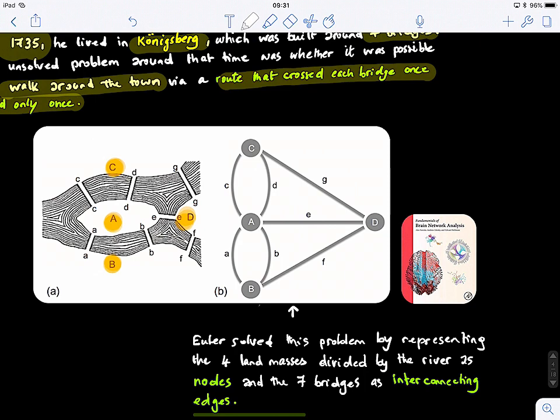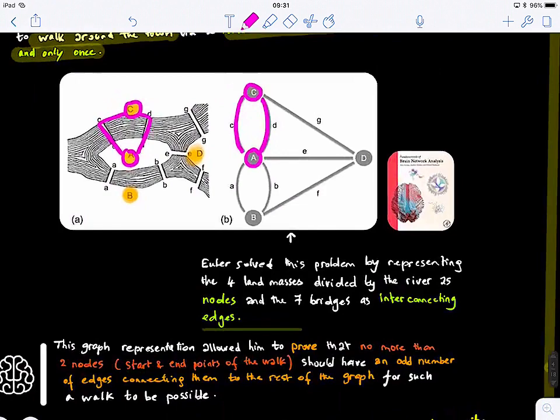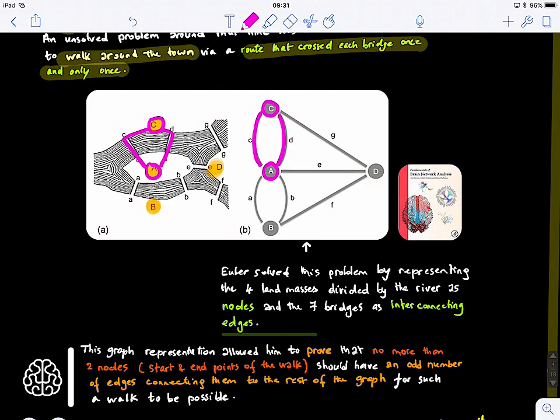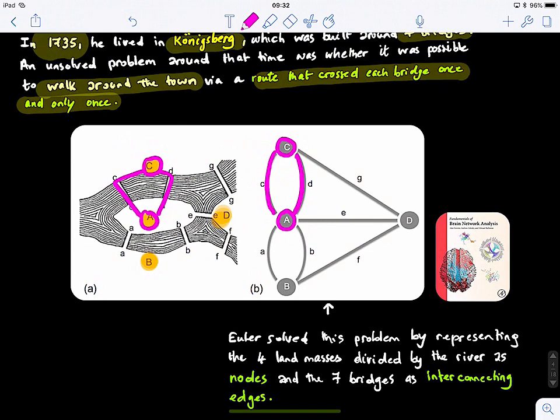This is the graph he defined for the city. You can see, for example, if you want to go from node C to A, you need to cross either D or C. You have two possible bridges. That's how he constructed that. After that, it turns out that he modeled it as a graph and tried to solve it. Do you think it's solvable? This is what he tried to prove, whether this is solvable or not.